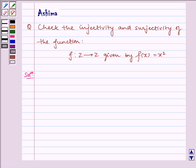Hello and welcome to the session. Let us understand the following problem. Check the injectivity and surjectivity of the function given to us: f is a function from Z to Z given by f(x) equals x squared.